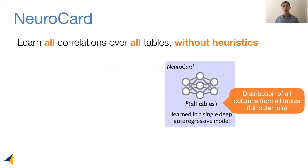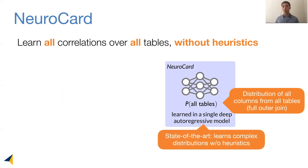At a high level, we learn a probabilistic model over the entire database. Specifically, we are going to learn the distribution of the full outer join, which contains all columns from all tables. Second, we are going to use the best tool to date to learn this potentially complex distribution — a deep autoregressive model — which allows us to remove heuristic assumptions such as the independence assumption.